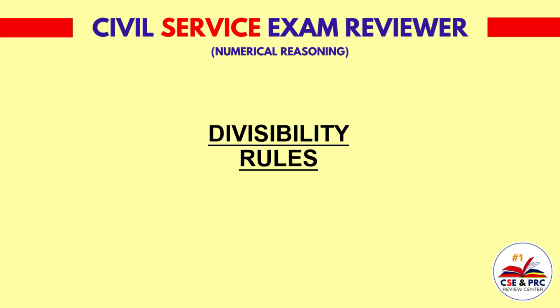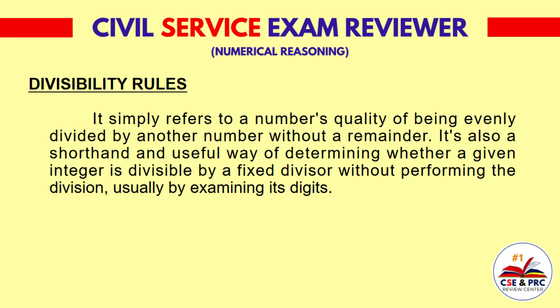The first topic in this numerical reasoning series is the divisibility rules. It simply refers to a number's quality of being evenly divided by another number without a remainder. It's also a shorthand and useful way of determining whether a given integer is divisible by a fixed divisor without performing the division, usually by examining its digits.